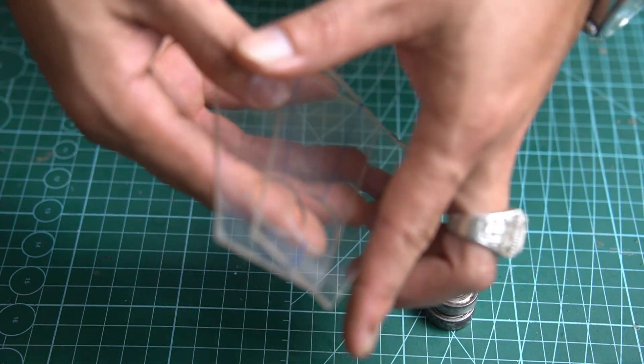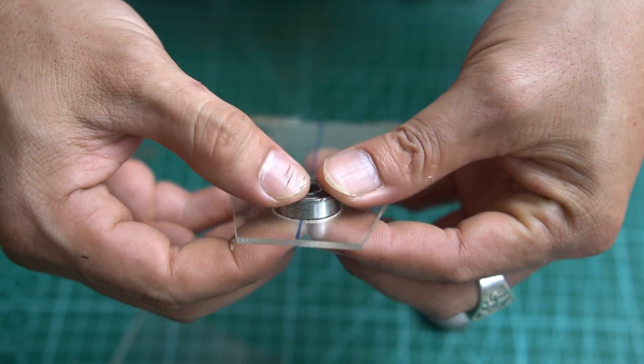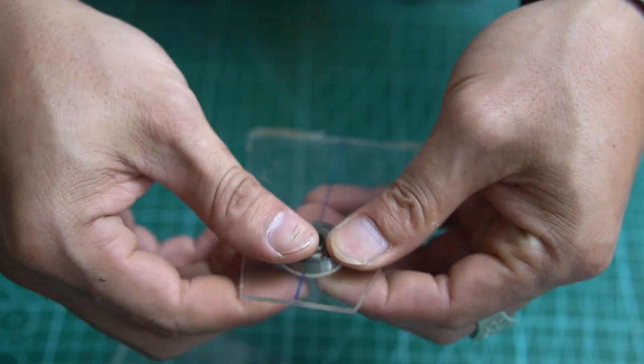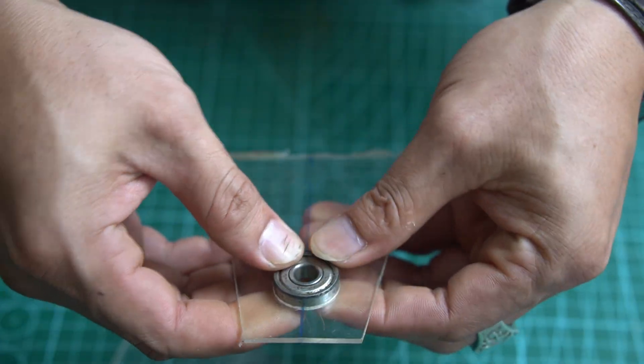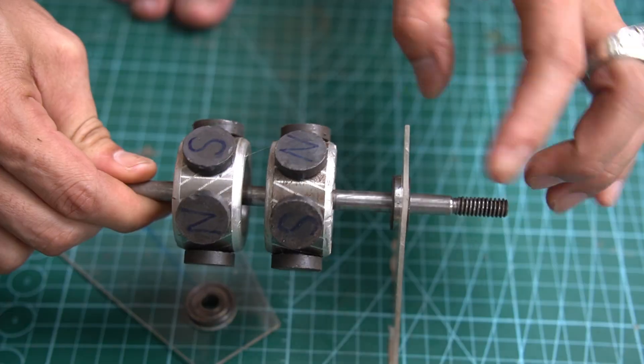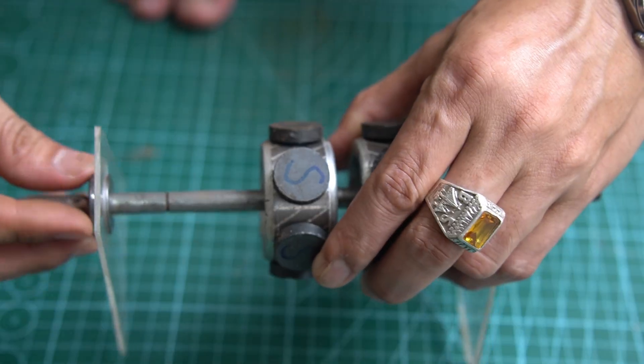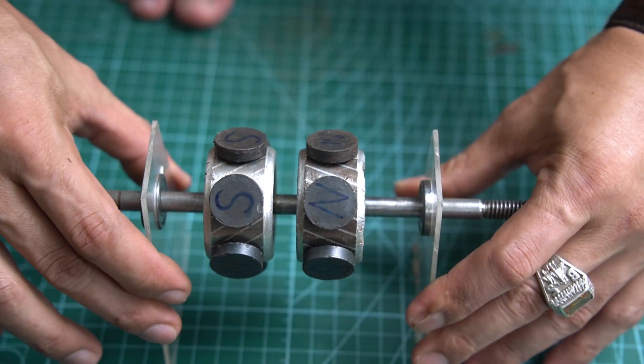Next, I use two small 20 millimeter bearings and two rectangular mica pieces, each with a 20 millimeter circular hole drilled into it. I insert the two bearings into the circular holes on the two mica pieces.